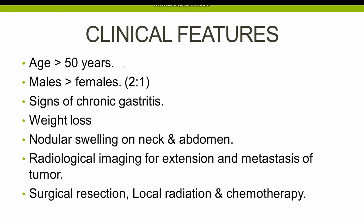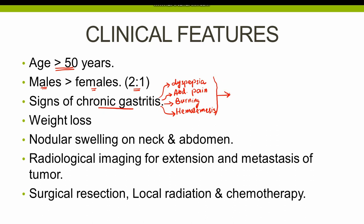Like all cancers, gastric adenocarcinoma has a slow and insidious onset, and is mostly discovered in patients over 50 years of age. The disease is more common in males than females, with a ratio of 2:1. Once the disease presents, signs and symptoms of chronic gastritis appear and it is often misdiagnosed as chronic gastritis. These symptoms include dyspepsia, epigastric abdominal pain, burning sensation in the stomach, and in certain cases hematemesis. The tumor is mostly discovered accidentally on endoscopy and biopsy.